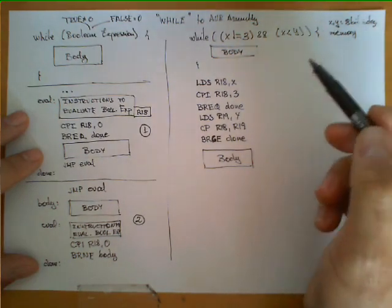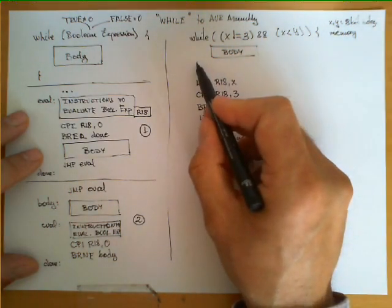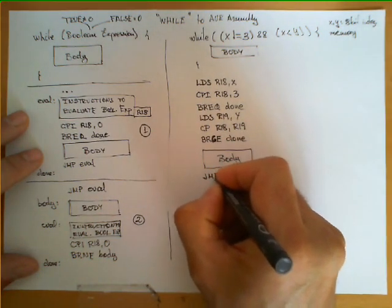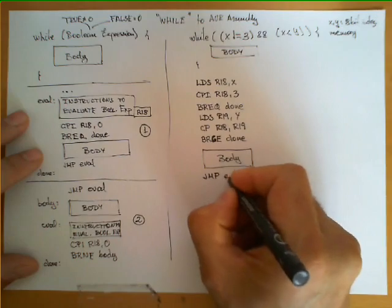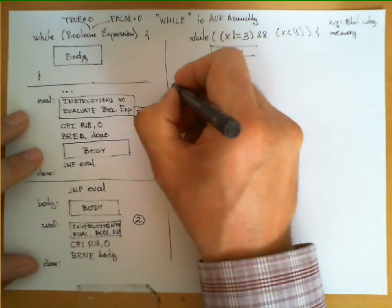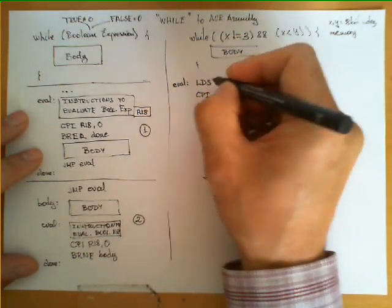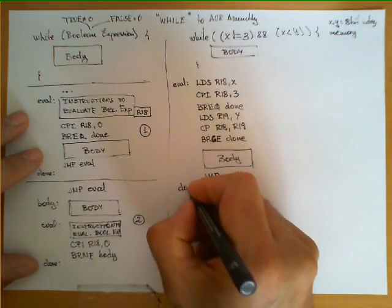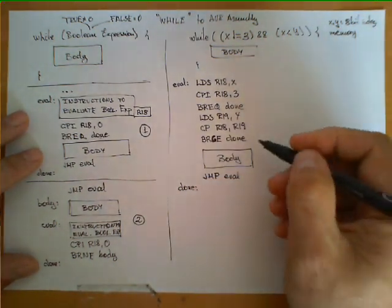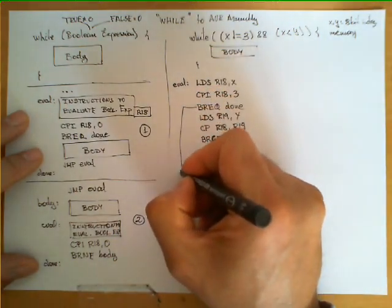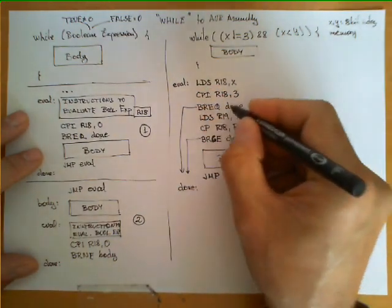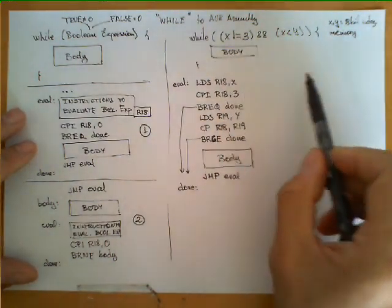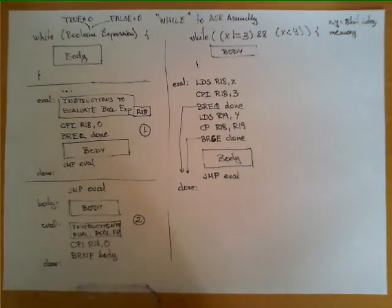Finally, as soon as we are done executing the body, we need to go back and keep evaluating the expression, so we place an unconditional jump to the label eval, which we place at the beginning of these instructions. The only thing missing is to attach the label done, which is the destination of these two conditional jumps in case any of the conditions is false. This sequence of instructions implements the behavior of the while loop in the AVR architecture.